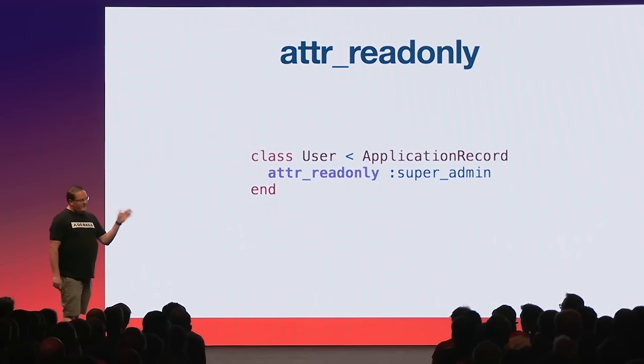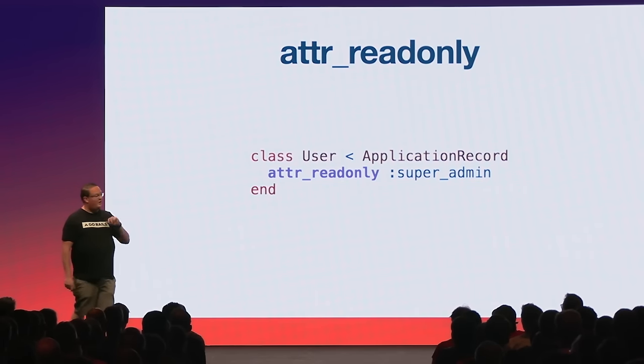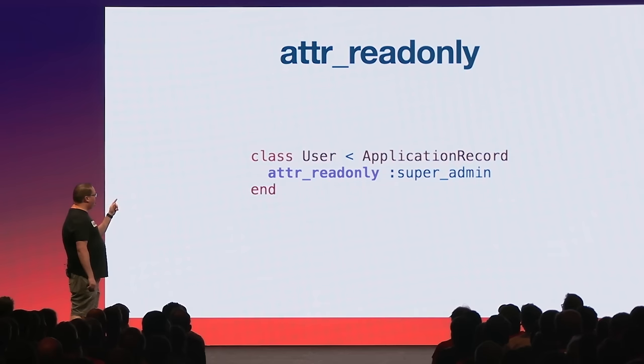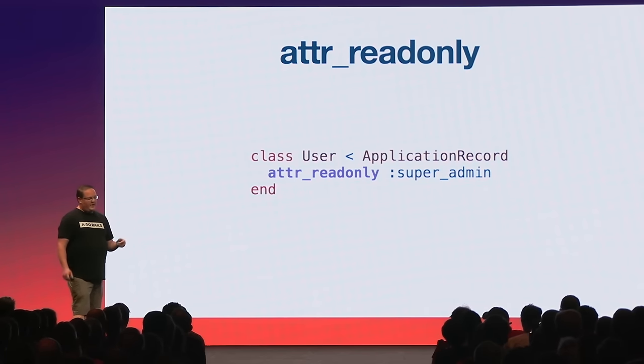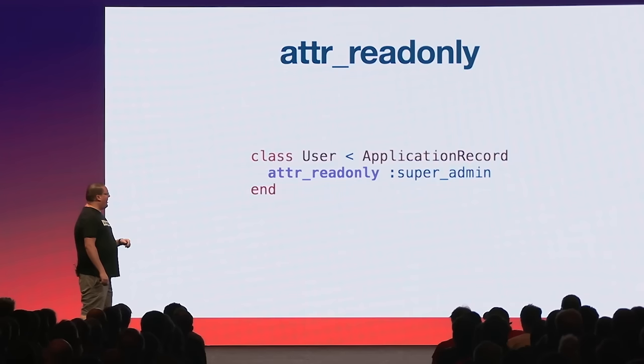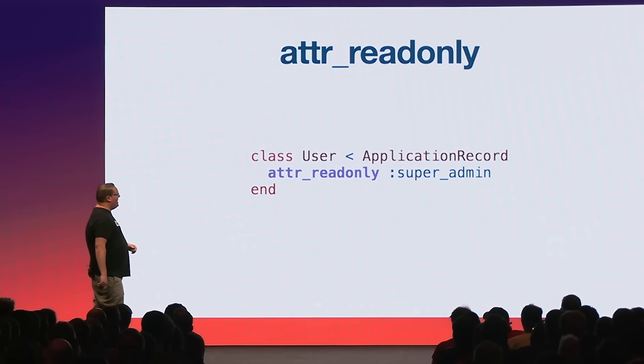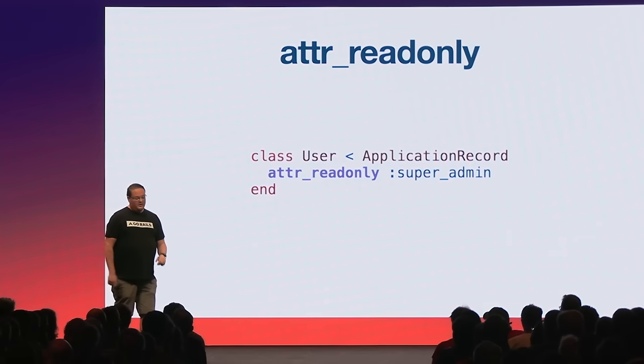`attr_readonly` is another cool thing. If you have an attribute you definitely don't want any user to ever change — like a super admin flag that controls access to the admin area — you can use `attr_readonly` to mark it as read only. This will be handled anytime you do an update, ignoring those changes. Even if you try to get around it using `update_column`, it will skip it as well.